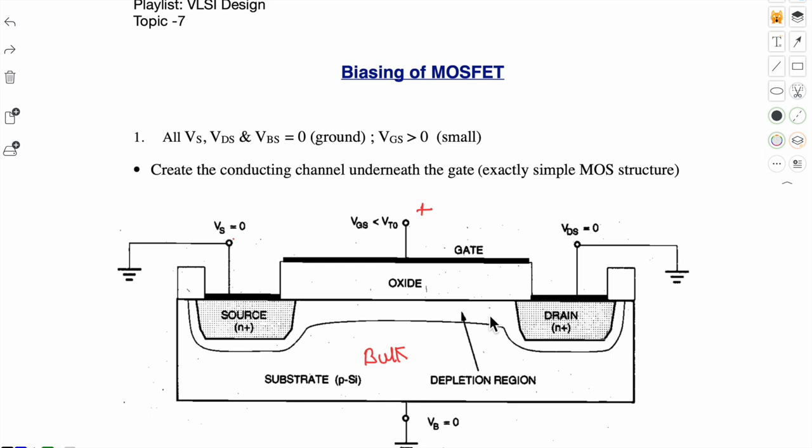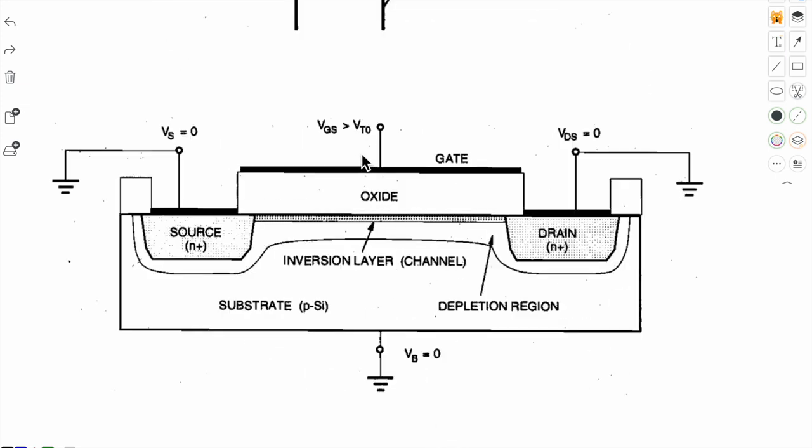Now we will further increase the positive voltage at gate terminal. After a certain positive voltage, electrons will get attracted towards the surface.